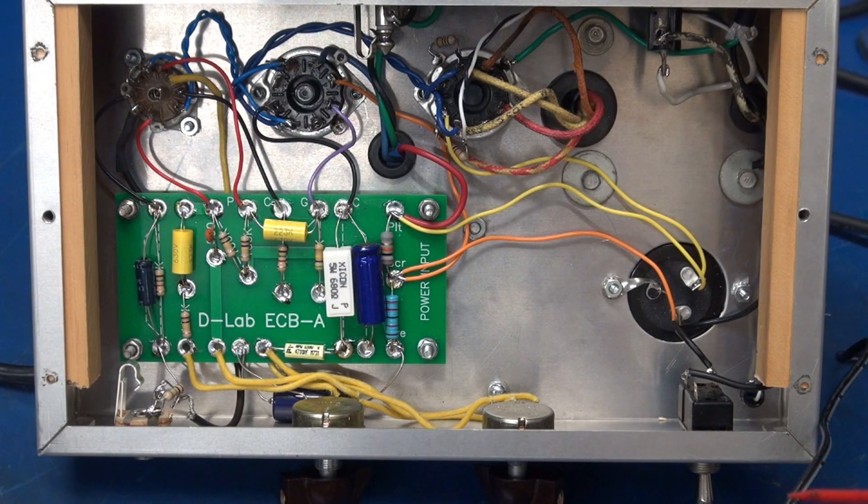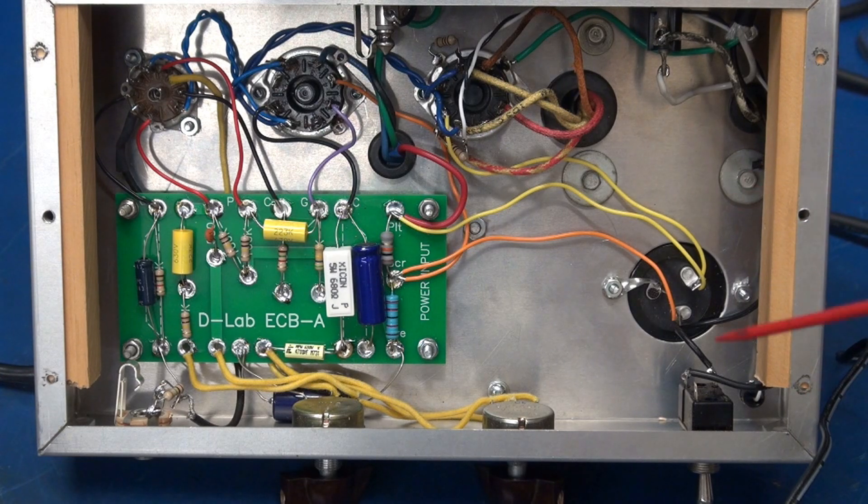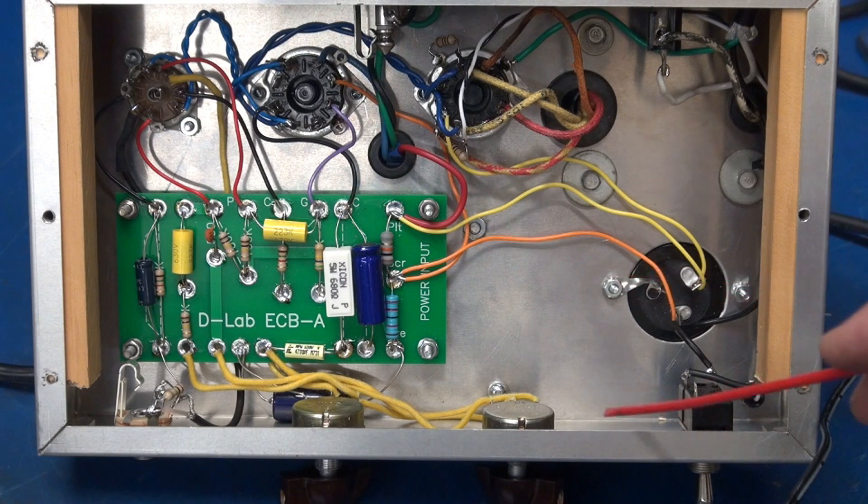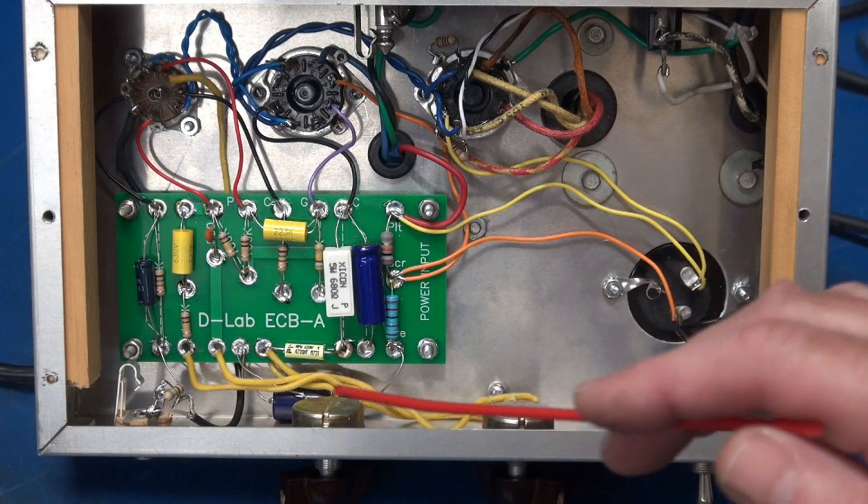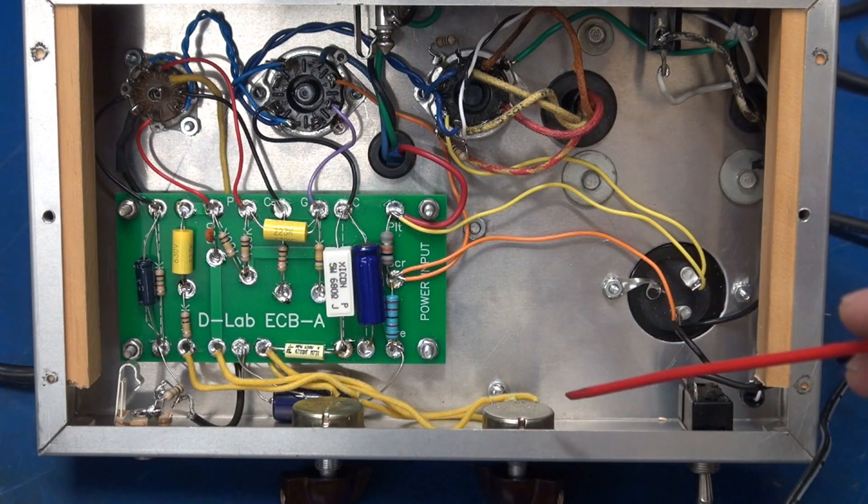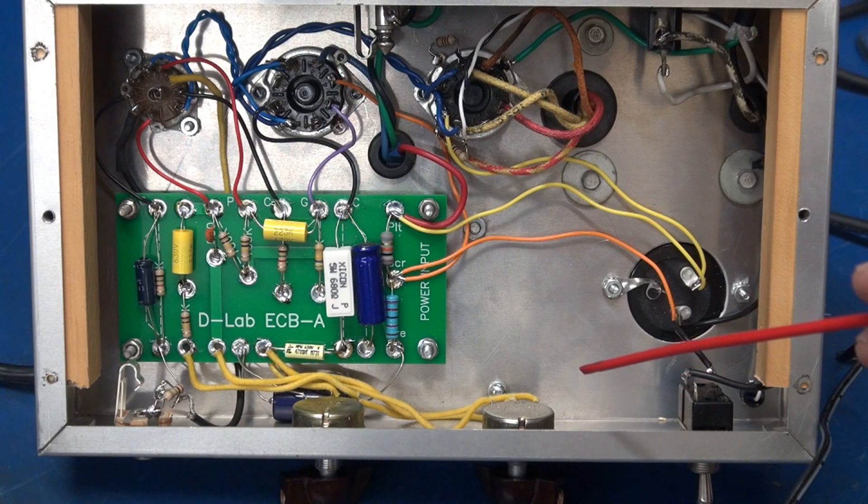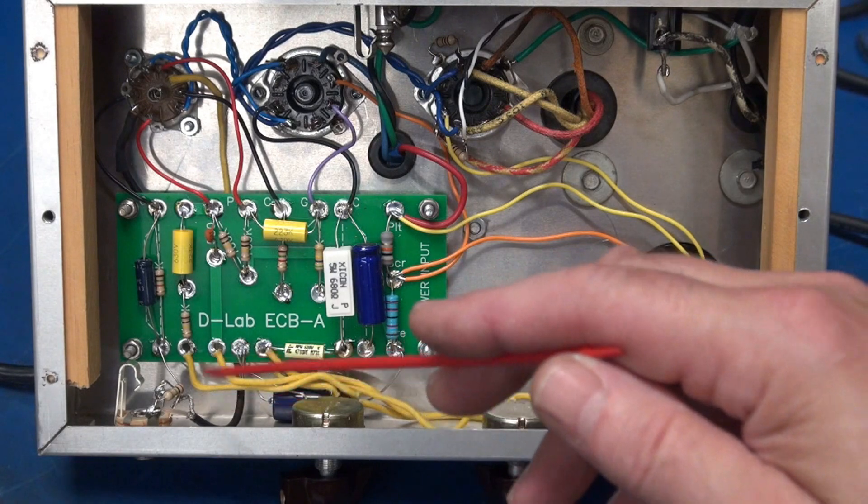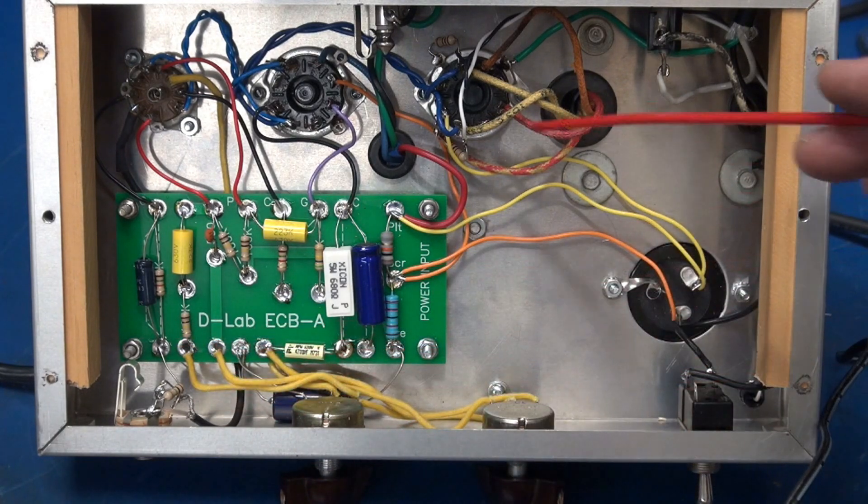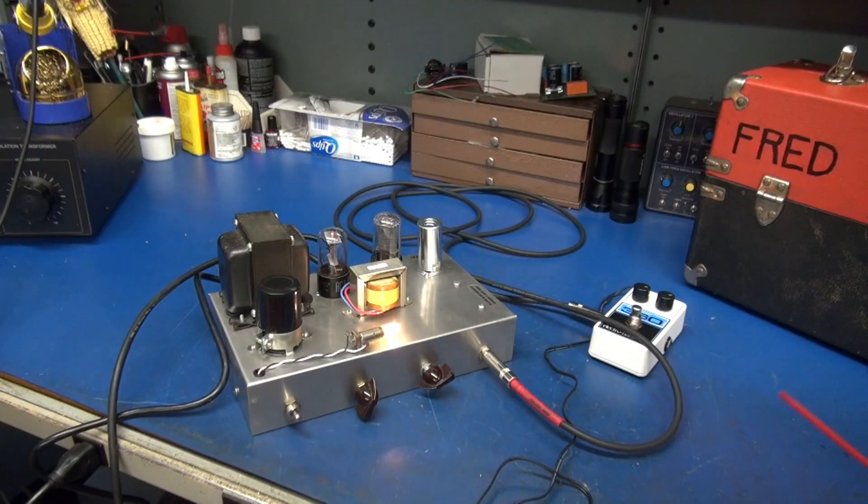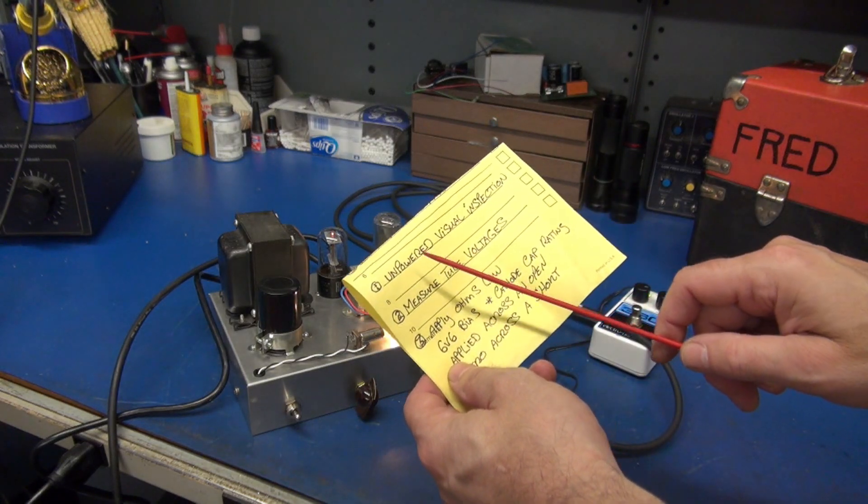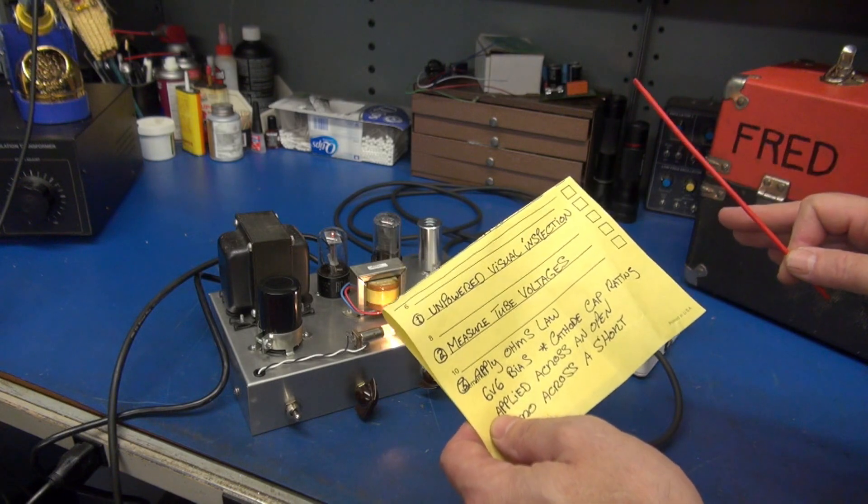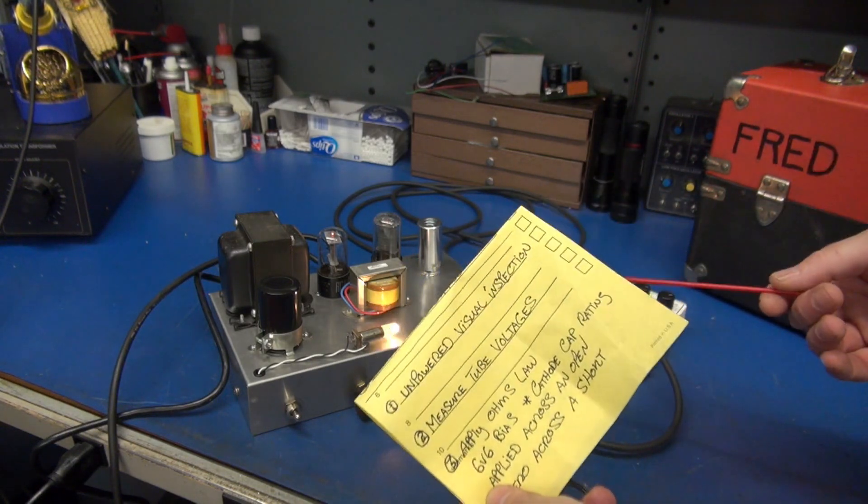It's always a good idea when troubleshooting, especially if this was a fresh build, to go through and verify all of your wiring. Make sure that your ground points are connected. Many times these amps have come into my shop where the power supply ground is connected but the preamp ground is not. All that appears normal in this amp.